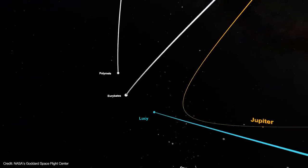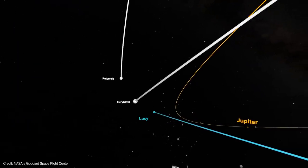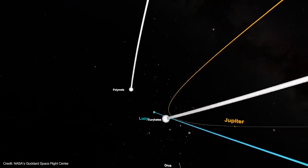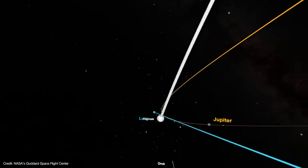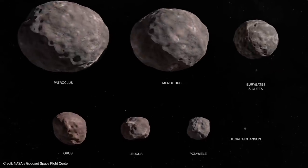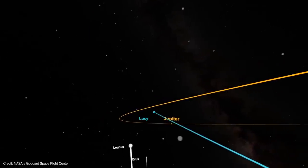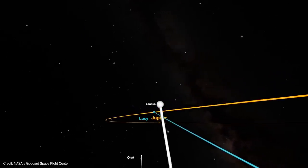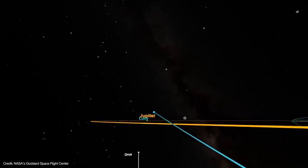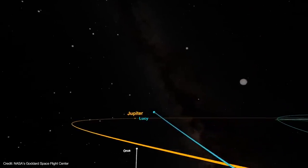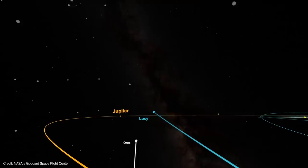About a month later, in September 2027, Lucy flies past its second target, asteroid Polymele. This is one of the smaller targets, so they'll have to take as many pictures as quickly as possible. Then it's on to another small asteroid, Locutius, for another photo frenzy. And then about seven months later, its final L4 flyby of asteroid Aorus.